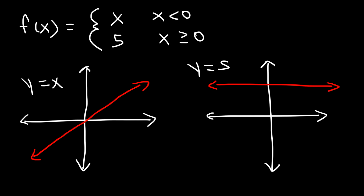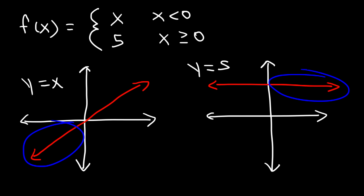We only need the portion of the graph where x is less than 0, and we need the other portion of the graph when x is greater than or equal to 0. So the piecewise function is going to combine the left side of this graph with the right side of that graph.